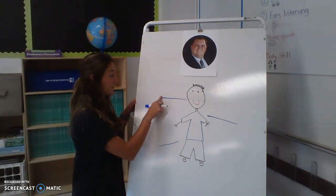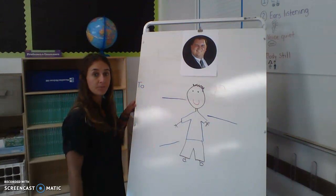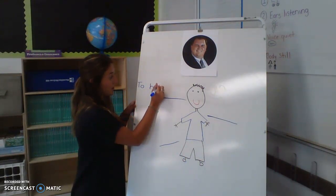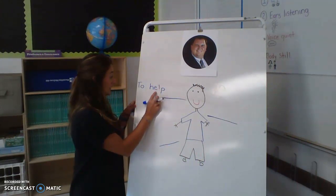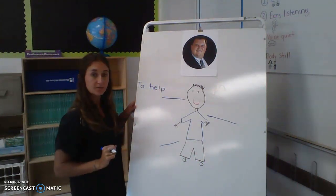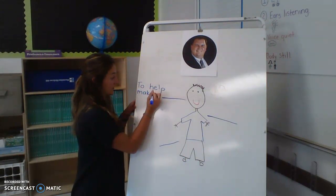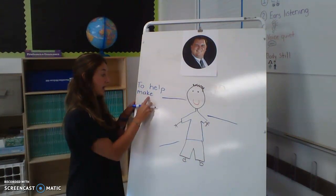So we are going to go ahead and write that, so write it with me. We're going to start with two. T-O. Make sure you have a space. To help. Help. Help. H-E-L-P. To help. Make. M-A-K. M-A-K-E.